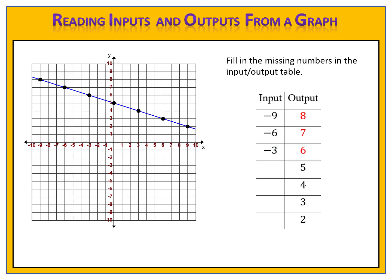Now let's take a look at the next exercise. This time we're told that the output is 5 and we need to find the input — which input has an output of 5? Finding this is a little different. We know we have a point where the y value, or the output, is 5, and we need to find the x value. Take a pencil or a highlighter and draw a line across the graph at 5. That shows you where the y values are 5. Where does your graph cross that line? At this spot right here. Draw an arrow down — the input is 0. So when the output is 5, the input is 0.